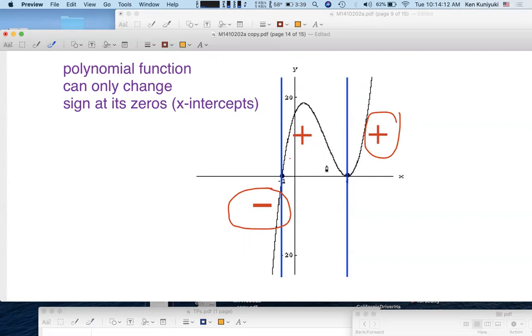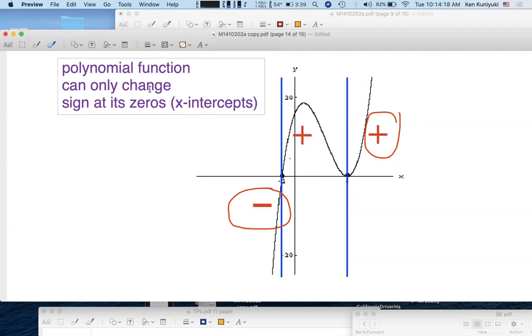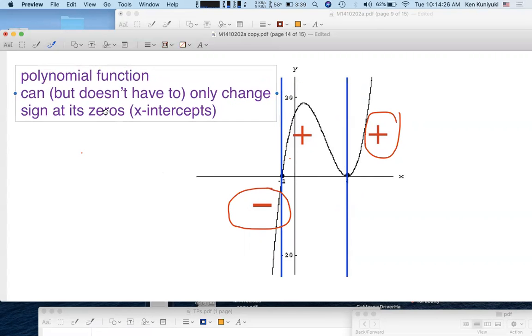But does it have to change sign? Not necessarily, because the graph can bounce. So a polynomial function can only change sign, but doesn't have to, change sign at the x-intercepts or the real zeros.